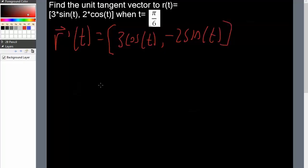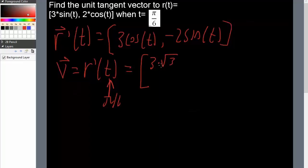And now we need to plug in to get the v value equals r'(t). We insert pi over 6 and by doing this we would get 3 times square root of 3 divided by 2, minus 1.